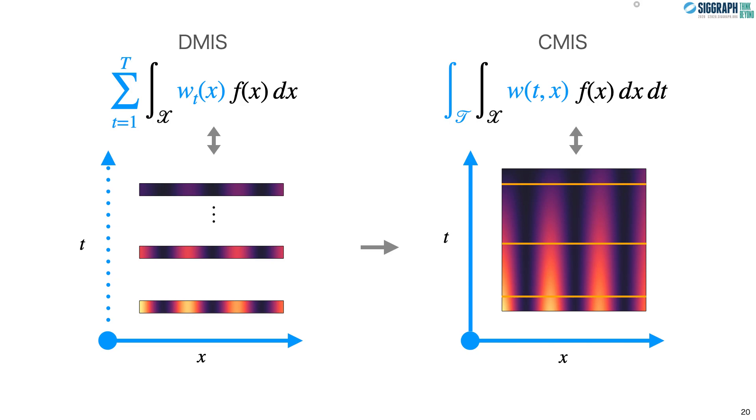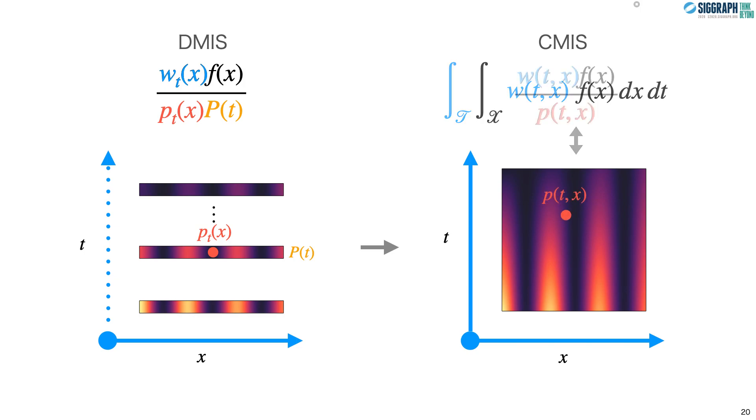Like DMIS, CMIS also has a corresponding one-sample estimator. In DMIS, we select a technique with some probability, and from it a sample with some density. In CMIS, as we now have two continuous random variables x and t, we can sample them according to their joint probability density, giving us an ordinary Monte Carlo estimator for the double integral. The one-sample DMIS and CMIS estimators are analogous. We normally sample a technique first, which leads to the following factorization of the joint probability density, where we see that the unitless probability of technique selection becomes the probability density, and what was the probability density of a sample for a specific technique is now the conditional probability density.